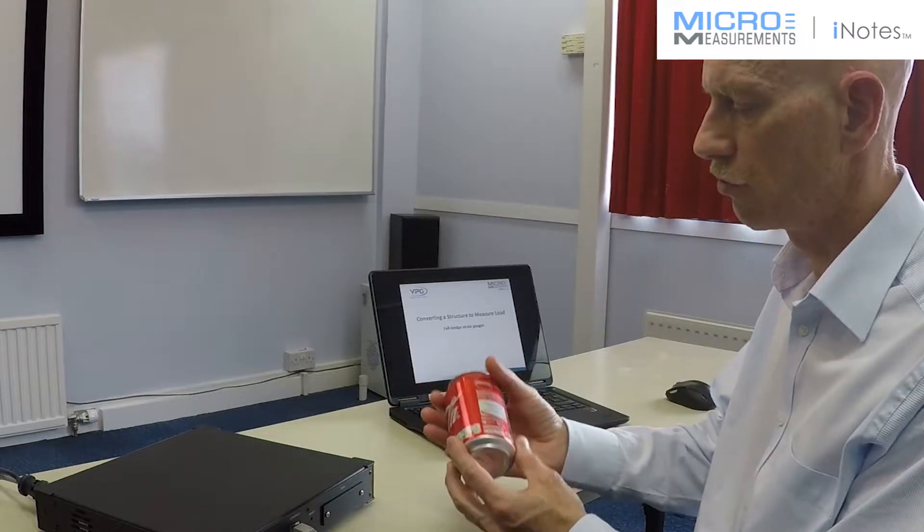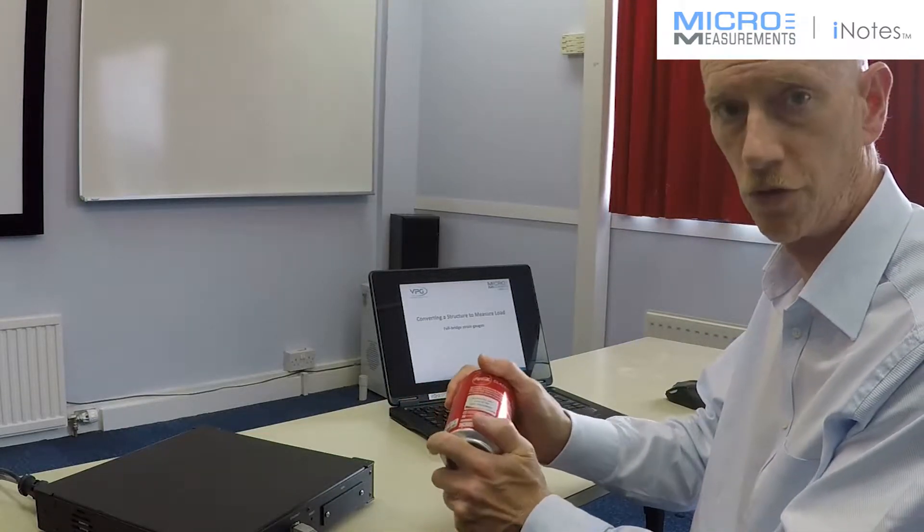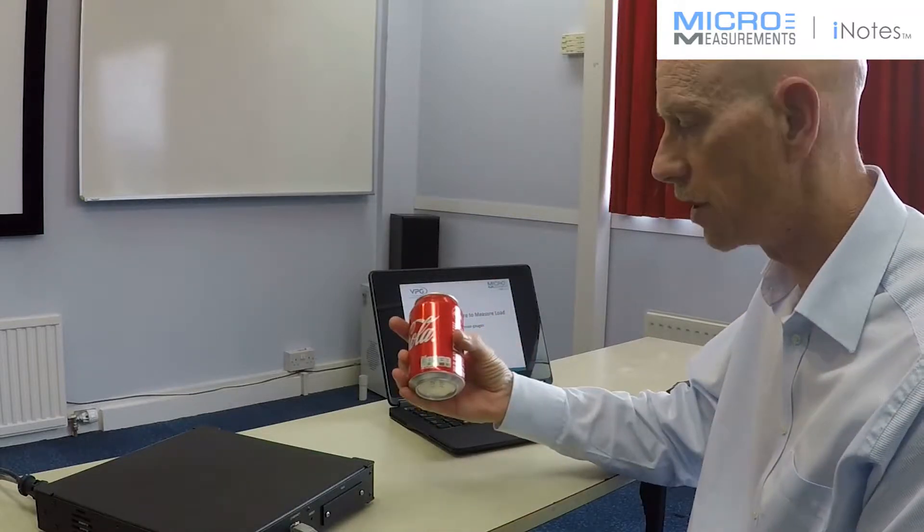So, for example, I can take this drinks container and I can bond a single backing on to convert this into a torsion transducer. In fact, that's exactly what we're going to do with this can.